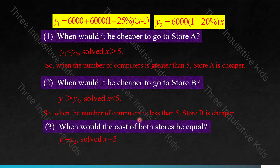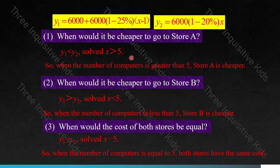When would the cost of both stores be equal? That's when Y1 equals Y2, giving X equals 5. Notice that in all three expressions — X greater than 5, X less than 5, X equals 5 — the same number, 5, is used. Once you find that center point, you can determine all the relationships from it. So when the number of computers equals 5, both stores have the same cost.